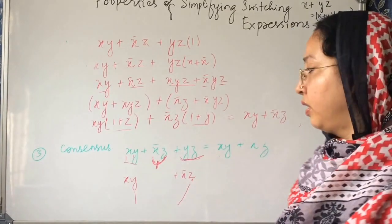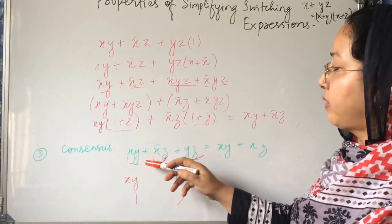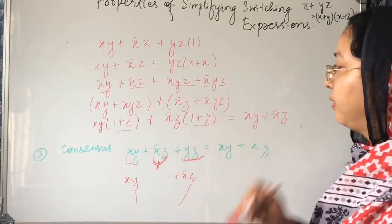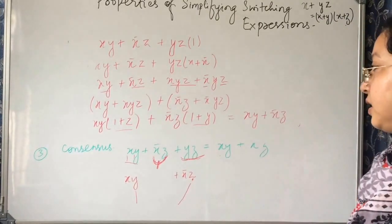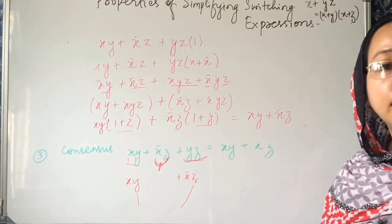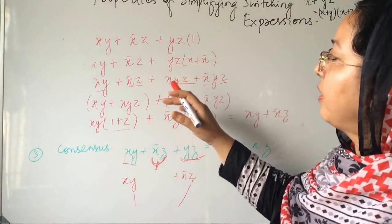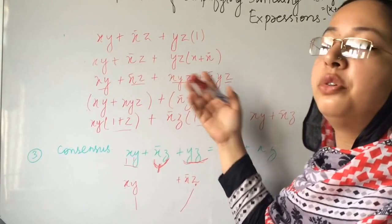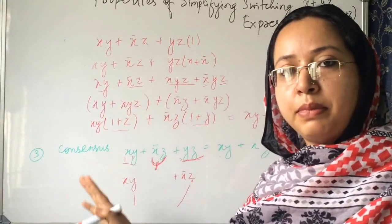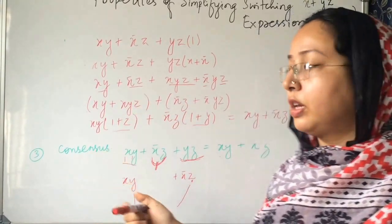So it has been proved that xy plus x bar z plus yz will be equal to xy plus x bar z. You can prove it in another way also. I have grouped like this. You can do another way also, but the result will be same. You will see some problems based on simplification of Boolean expressions in the next video.